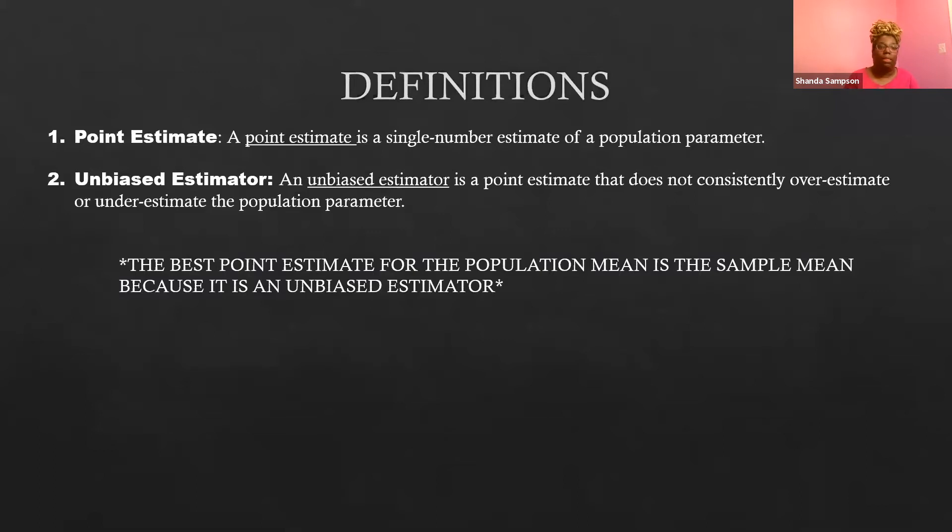What we're going to say is the best point estimate for a population mean is the sample mean because the sample mean is an unbiased estimate. Let's say that again. That's important. The best point estimate for the population mean is the sample mean because it is an unbiased estimate. It doesn't consistently overestimate or underestimate the population parameter.